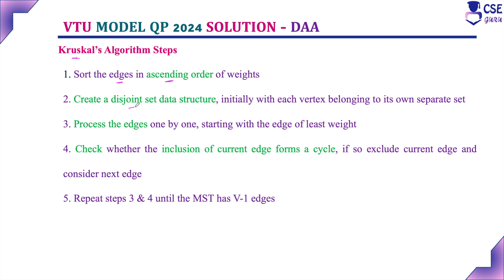Next, create a disjoint set data structure. Disjoint means, for example, A and B with no connection — there is no connection between them. You have to create a disjoint set data structure, initially with each vertex belonging to its own separate set. We should include only the vertices, not the edges.